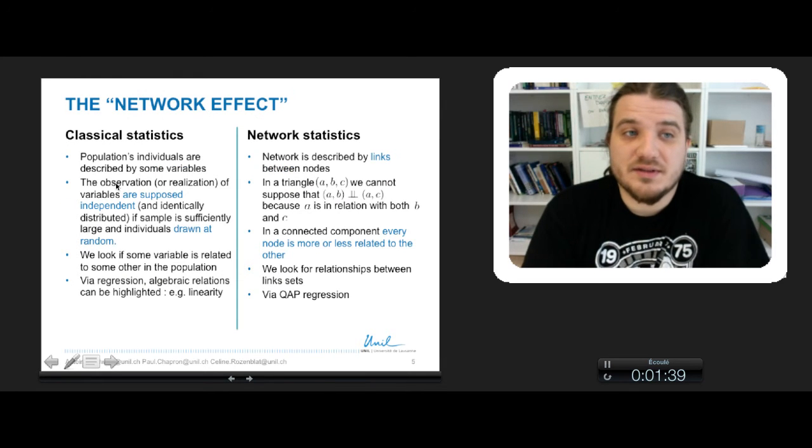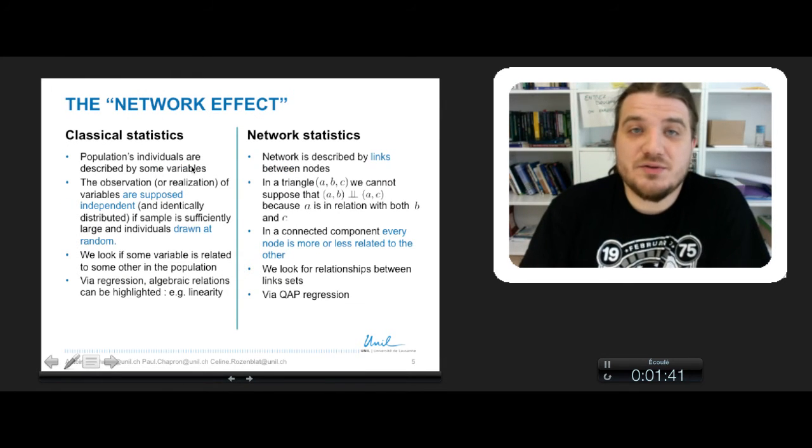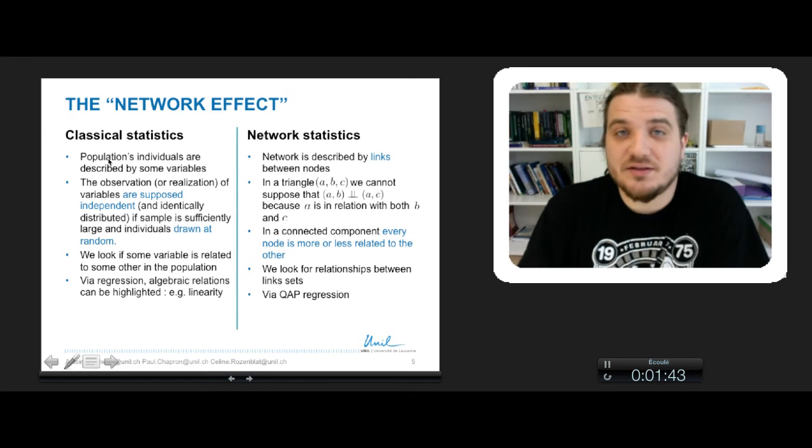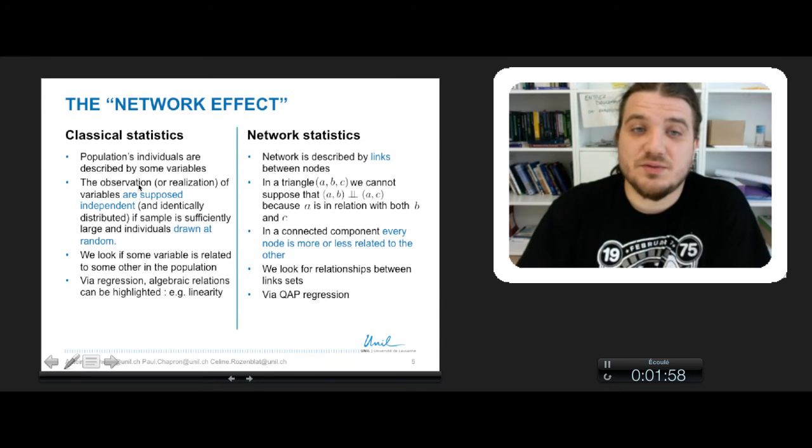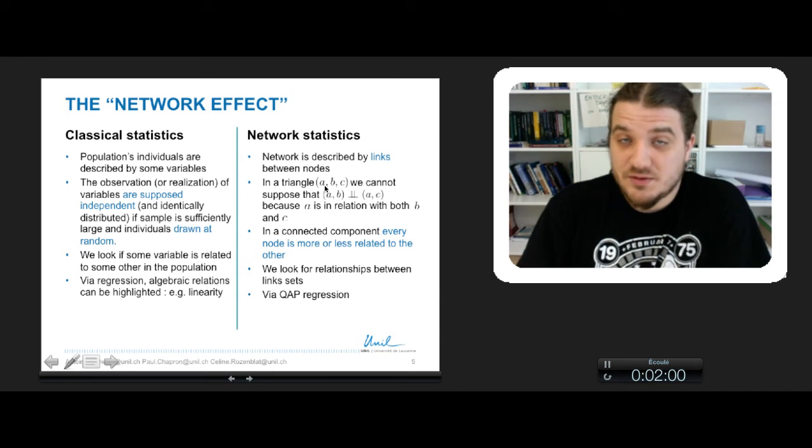So basically the network's effect is that, as opposed to classical statistics where a population is described by some variables, here a network is described by links between nodes. So in population, you can suppose that if your sample is sufficiently large and that you take observation at random, you have independence of observation, but in networks, for example when you have three nodes A, B, C,